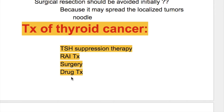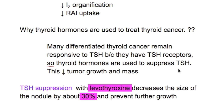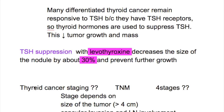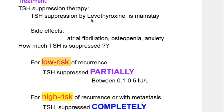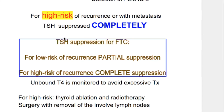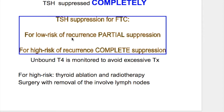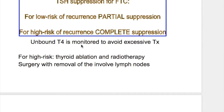Treatment of thyroid cancer depends on cell type and includes TSH suppression therapy, radioactive iodine, surgery, and drug treatment. Thyroid hormones are used to suppress TSH because TSH causes increased activity and growth of thyroid cancer. Levothyroxine decreases tumor growth and size by about 30% and prevents further growth. TSH suppression with levothyroxine is the main treatment, but side effects include atrial fibrillation, osteopenia, and anxiety. For low-risk groups, partial TSH suppression is used; for high-risk groups, complete suppression is done. Unbound T4 is monitored to avoid excessive treatment.